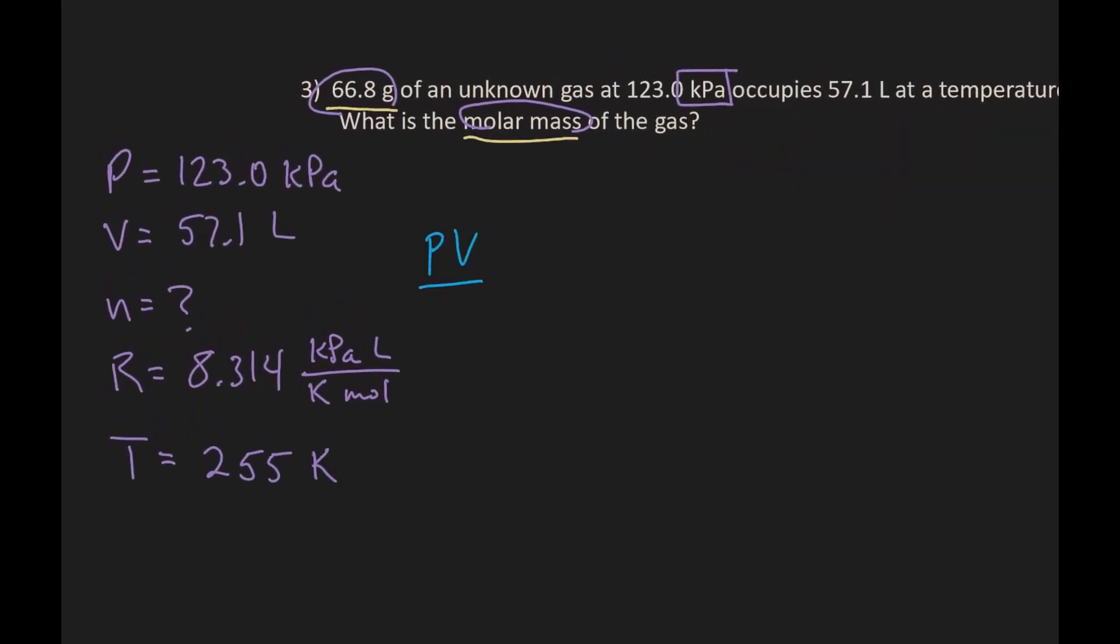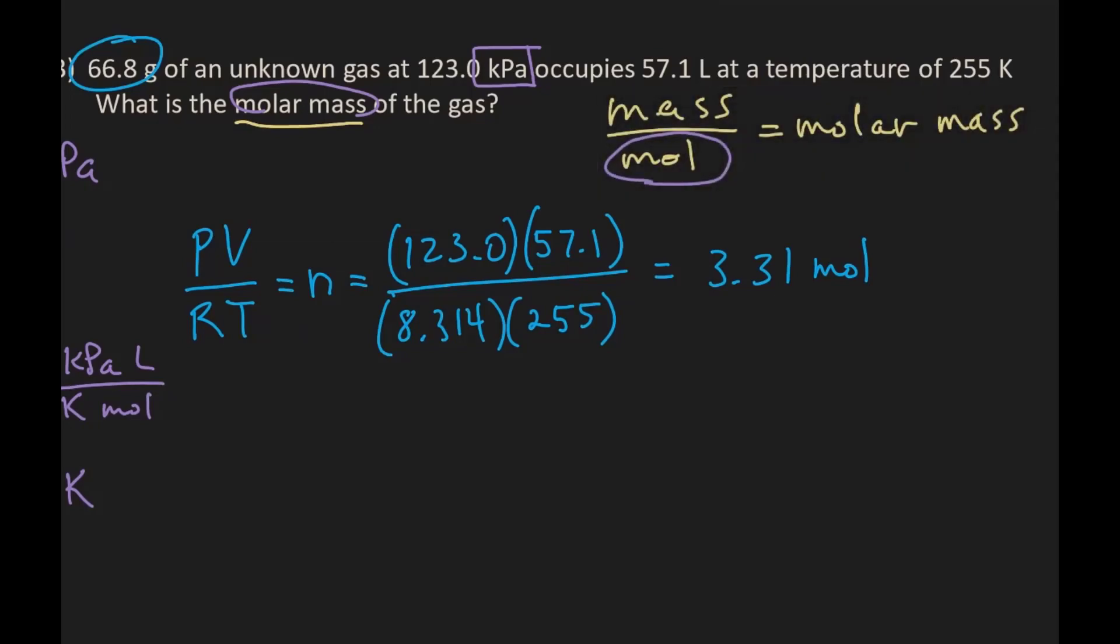So rearranging PV equals NRT, we get PV over RT equals N. And so plugging in our values to find N, we get 3.31 moles.